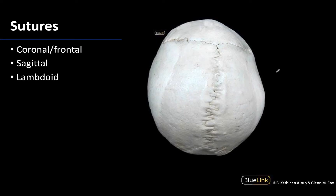We are looking at a superior view here. This is going to be anterior and this is going to be posterior. I know this because this is the larger frontal bone and you can only see a little bit of the occipital from a truly superior view.